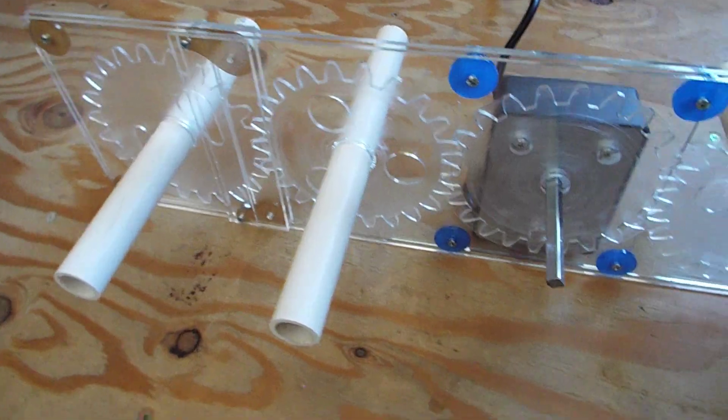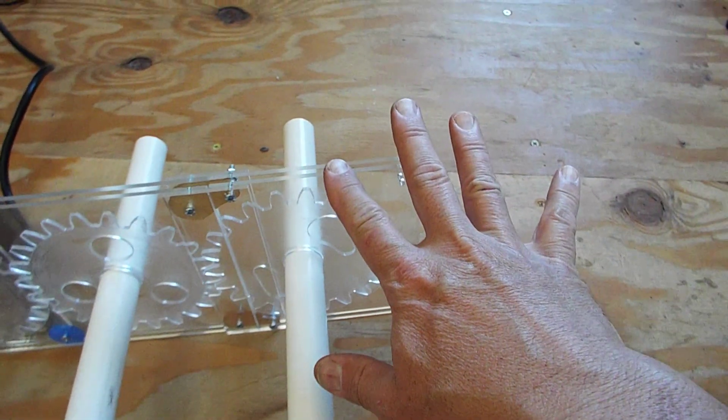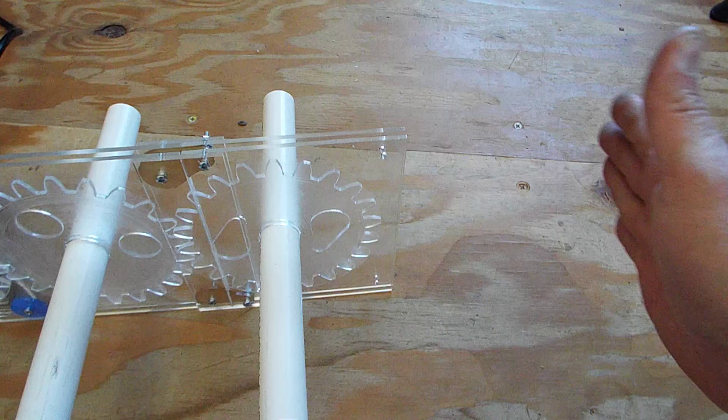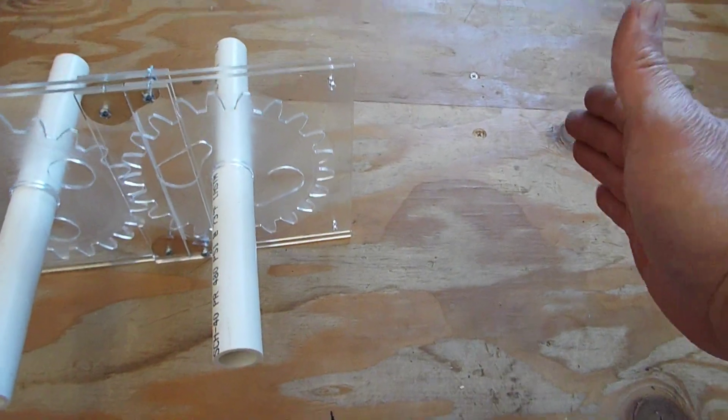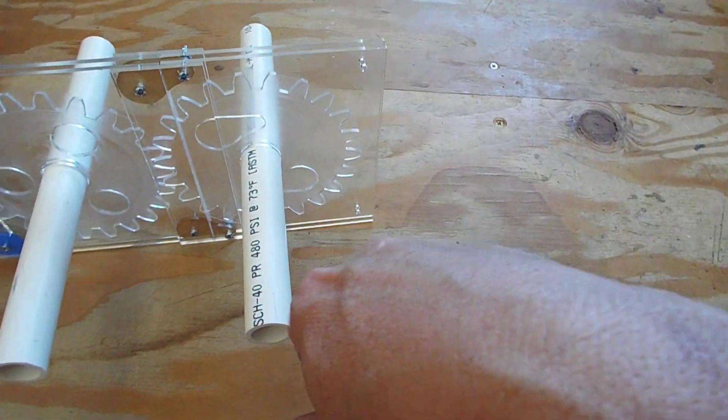Now the other cool thing is I could actually design this with two shafts per add-on or three shafts per add-on. So you could add a total of six cups to both ends of the base unit.